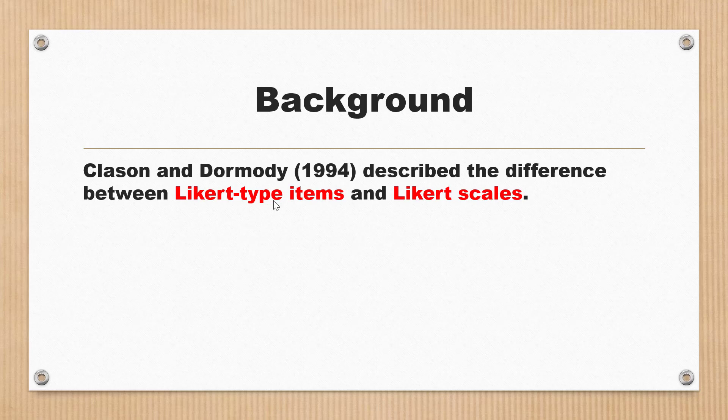Each question is considered a separate variable for Likert type items. But for Likert scales, we have a set of items combined together to form a composite variable — like the professional burnout scale — where the overall mean score is computed to represent the burnout construct. This is the key difference between Likert type items and Likert scales.